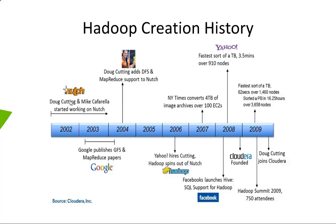Now Doug Cutting was surprised and said: these guys are doing exactly the same thing but they also manage node availability. So let's implement the same solution. He implemented the solution described in the Google paper — MapReduce — in Java. That's the formation of Hadoop's MapReduce core engine.